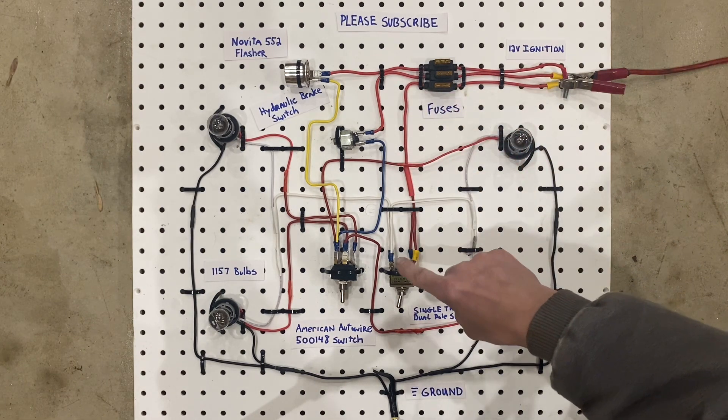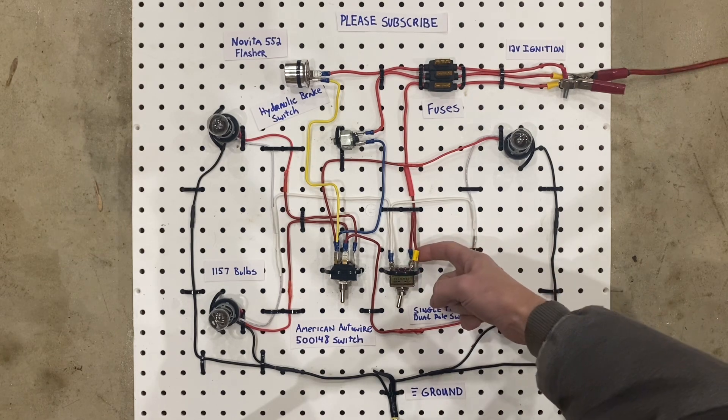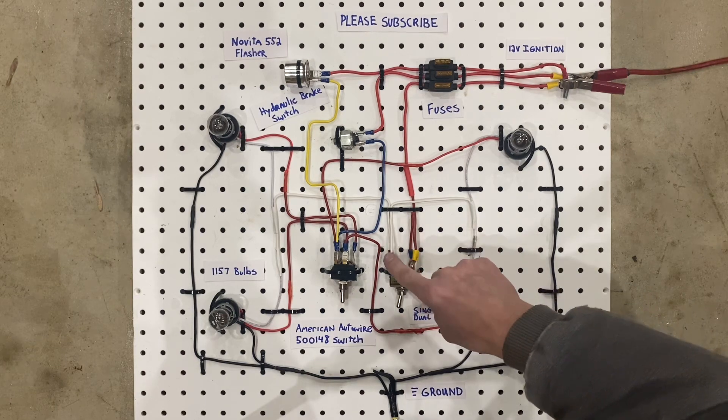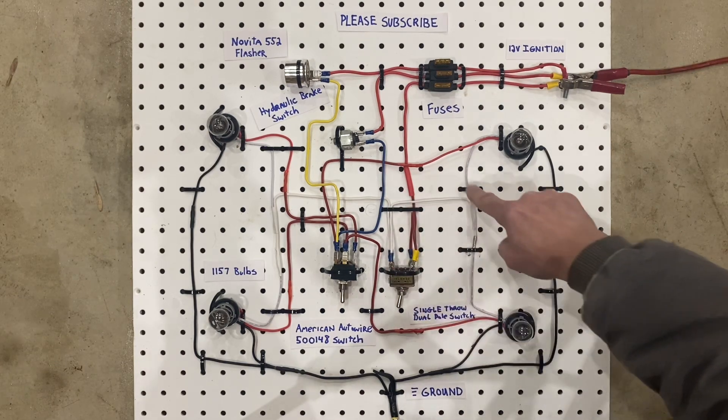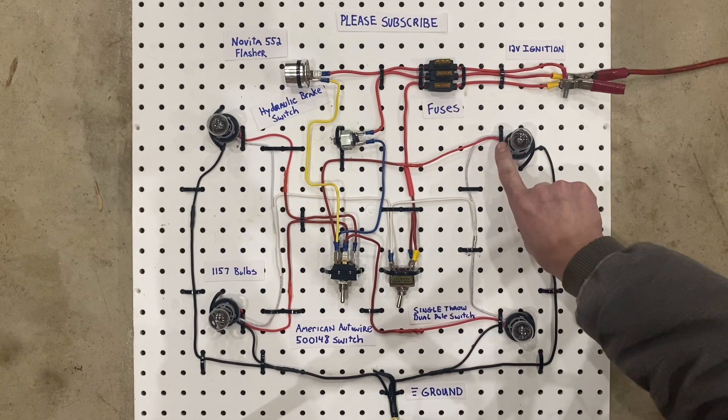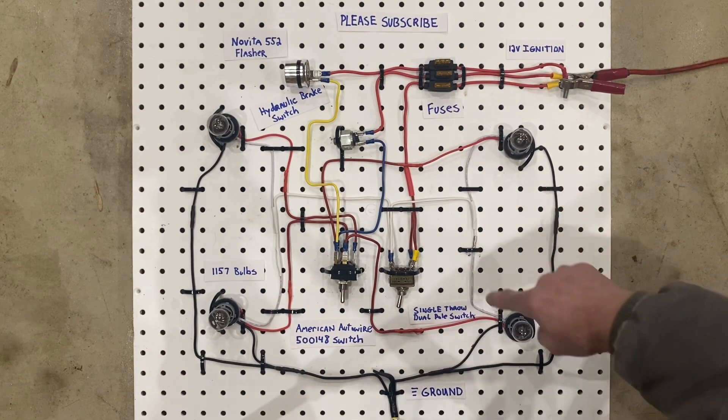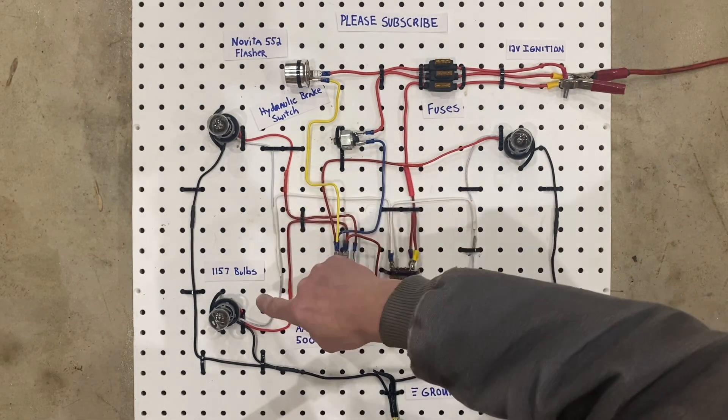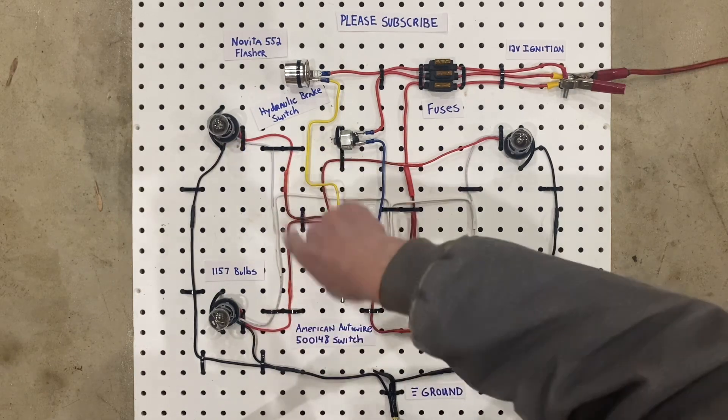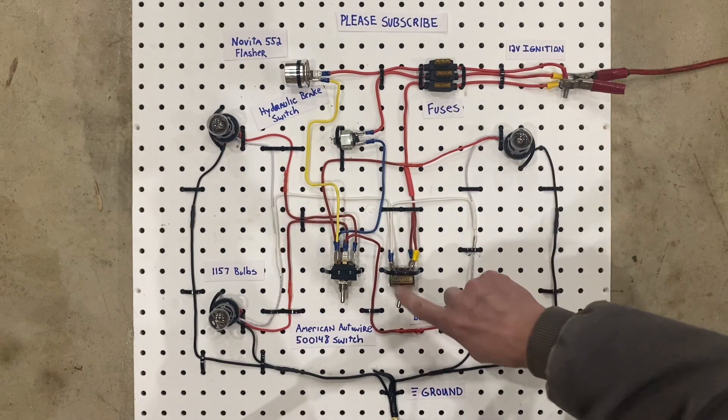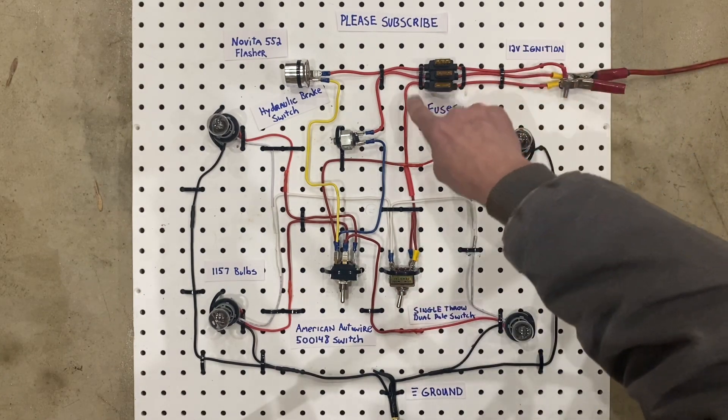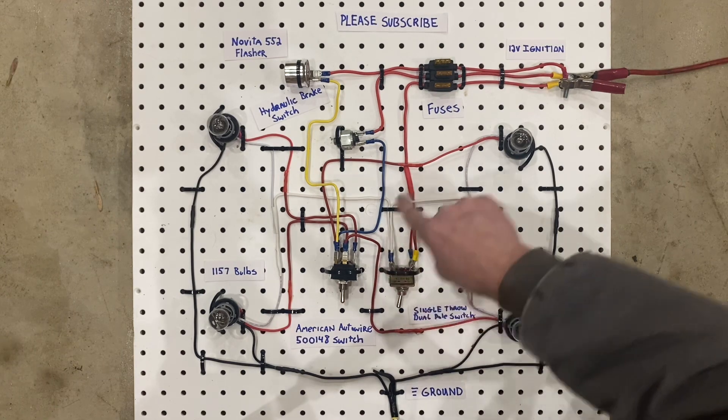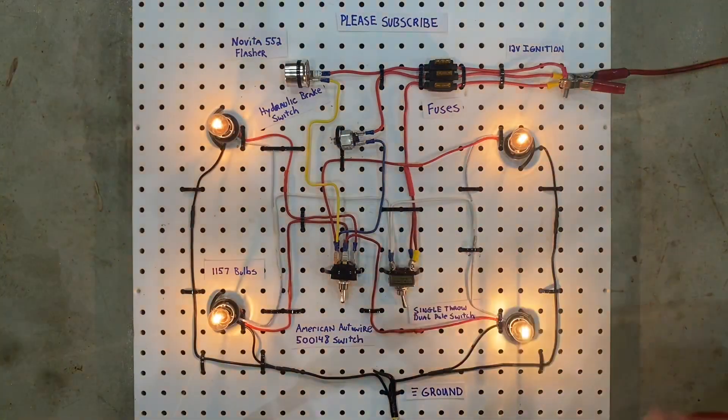It goes to the single throw dual pole switch, which it just jumps from one side of the switch to the other on this side. On the other side, you have one white wire coming over here that splits off and goes to this 1157 bulb and this 1157 bulb. The other white wire on this side goes to that side, and it does the same exact thing. So when you turn on the switch, all you're doing is you're taking the power that goes through the fuse, and you're jumping it from this side of the switch to this side of the switch, and the power goes to this side and that side.